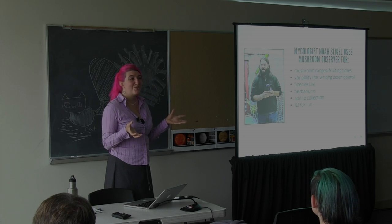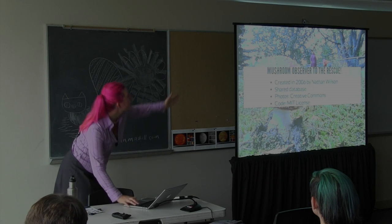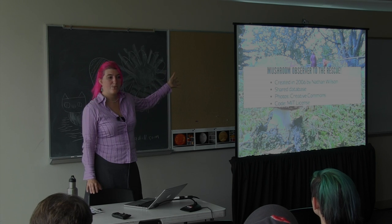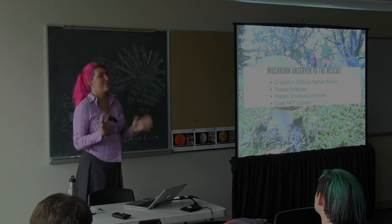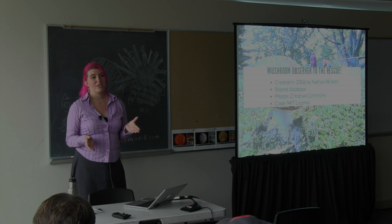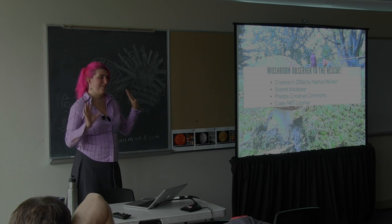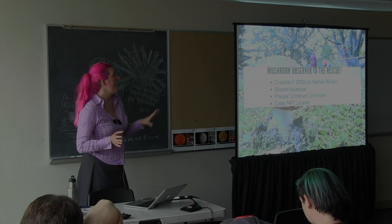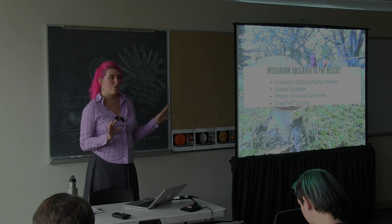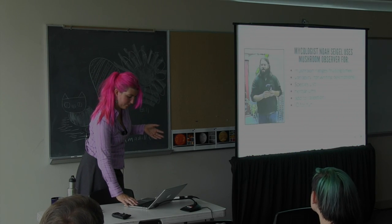Mushrooms also don't always look the same — they can be really strange. This is an Amanita muscaria, the Mario mushroom, one of the most famous mushrooms in the world. It's also toxic. A lot of people think it's fatal, but generally not fatal — it will make you trip and wish you'd never touched it. It's traditionally red, but you can see it in beige and yellow, sort of an orangey color. If you didn't know they weren't all red, you might not recognize it.